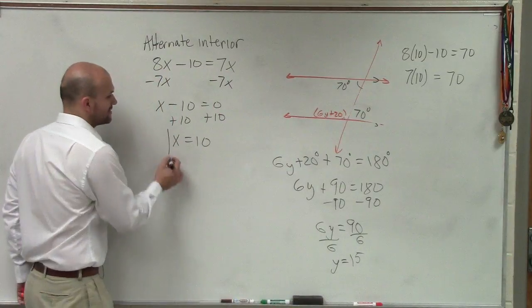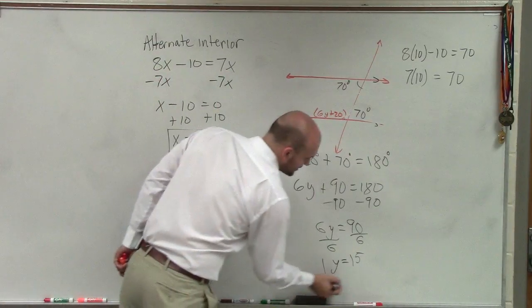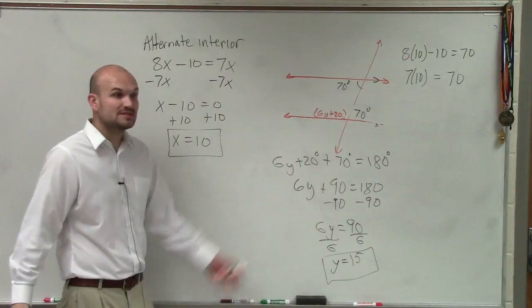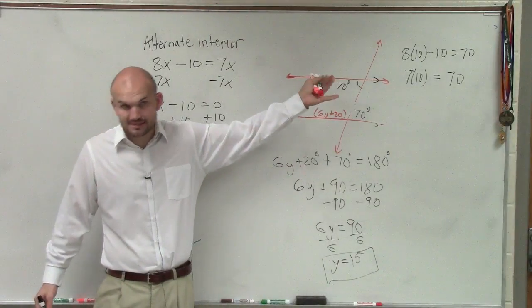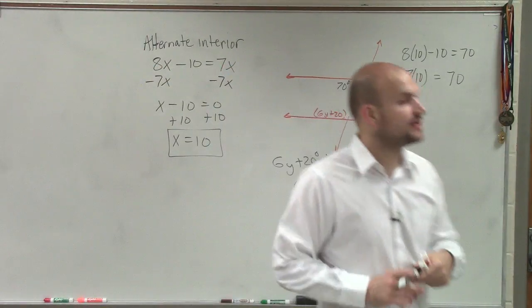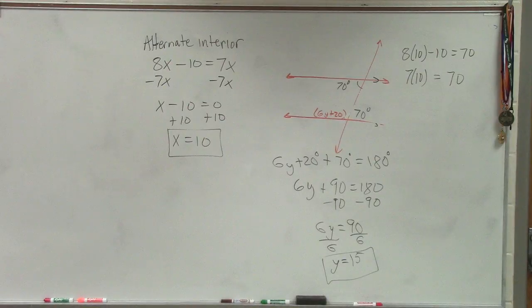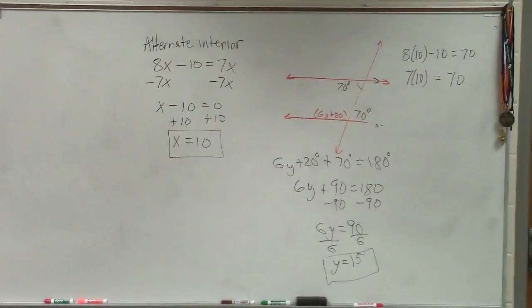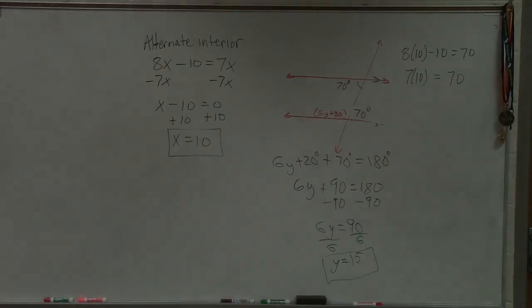So there you go. We figured out what the value of x was, and we figured out the value of y was by using our relationship of parallel lines and also remembering supplementary angles, which you guys cannot forget. Whenever two angles make up a line, you're going to have supplementary angles.